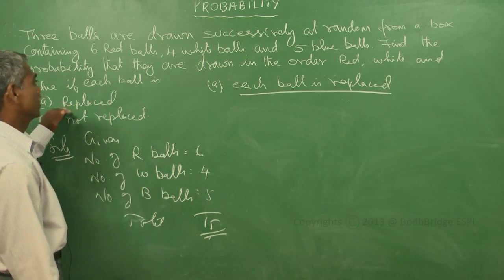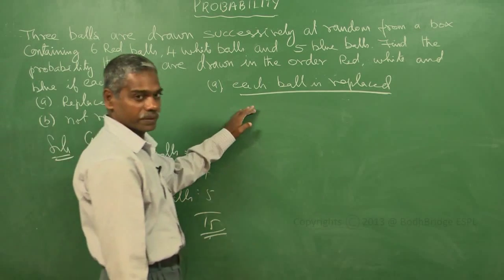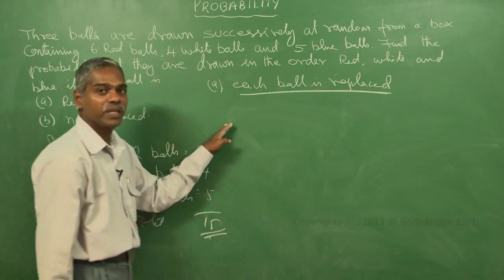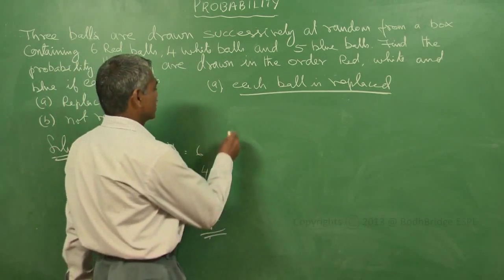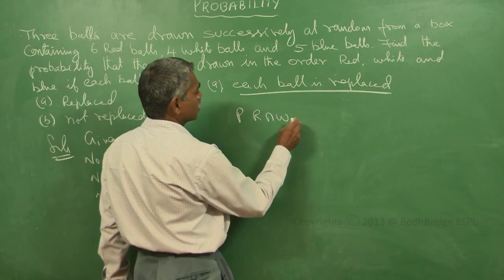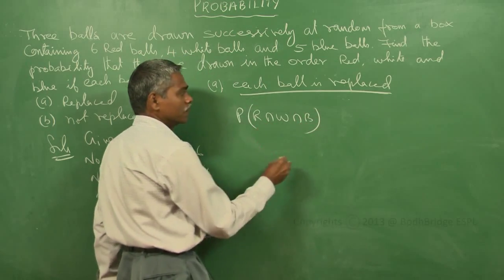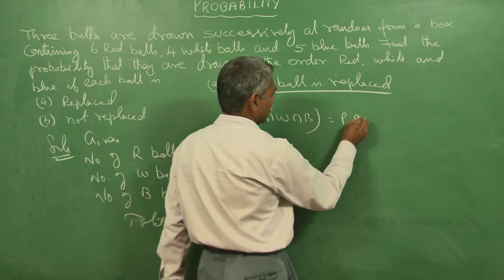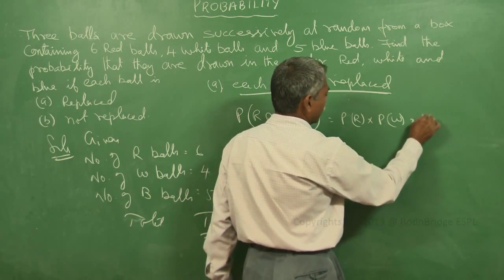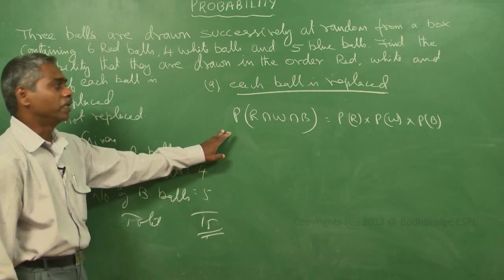The first case: if each ball is replaced, the events are said to be independent. So, P(R ∩ W ∩ B) is equal to simply P(R) × P(W) × P(B), since the events are independent.